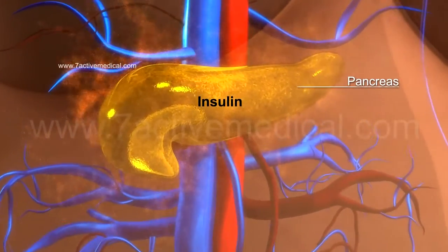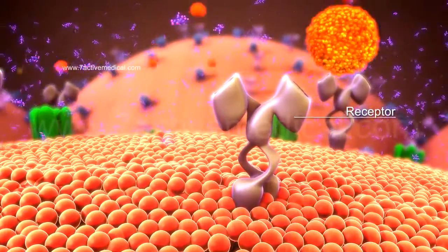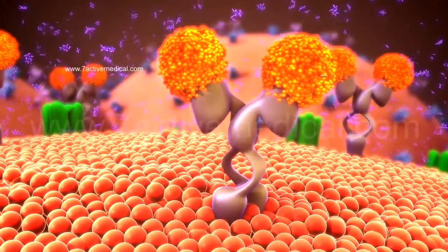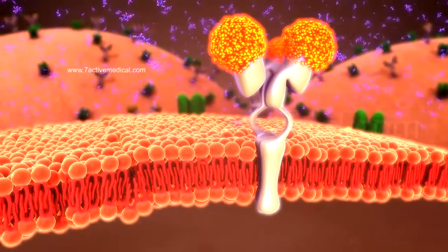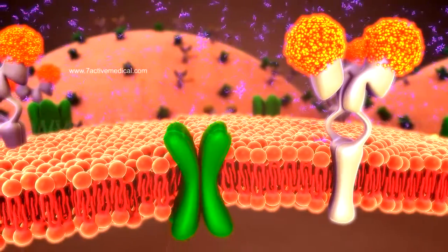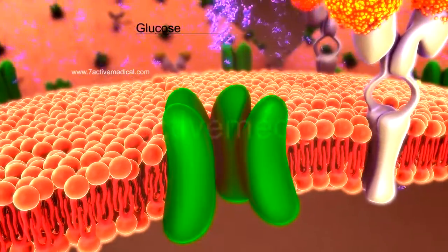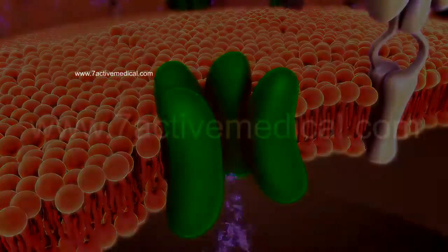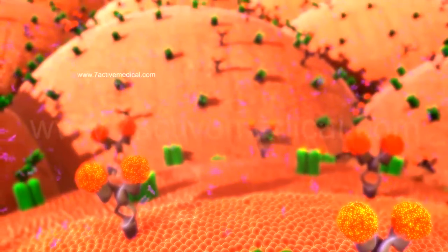Insulin, secreted by the pancreas, attaches to receptors in the cells, much like a key in a lock, thereby opening up the cell for the entry of glucose. The energy provided by glucose entering the cell allows the cell to perform its functions effectively.